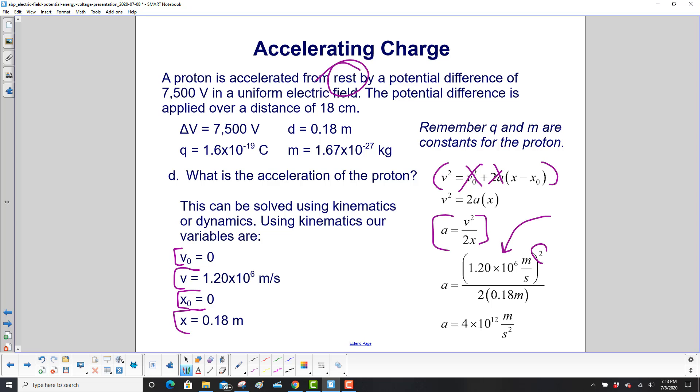Put in v. Square it. Divide by 2 times x. We get the acceleration as 4 times 10 to the 12th meters per second squared.